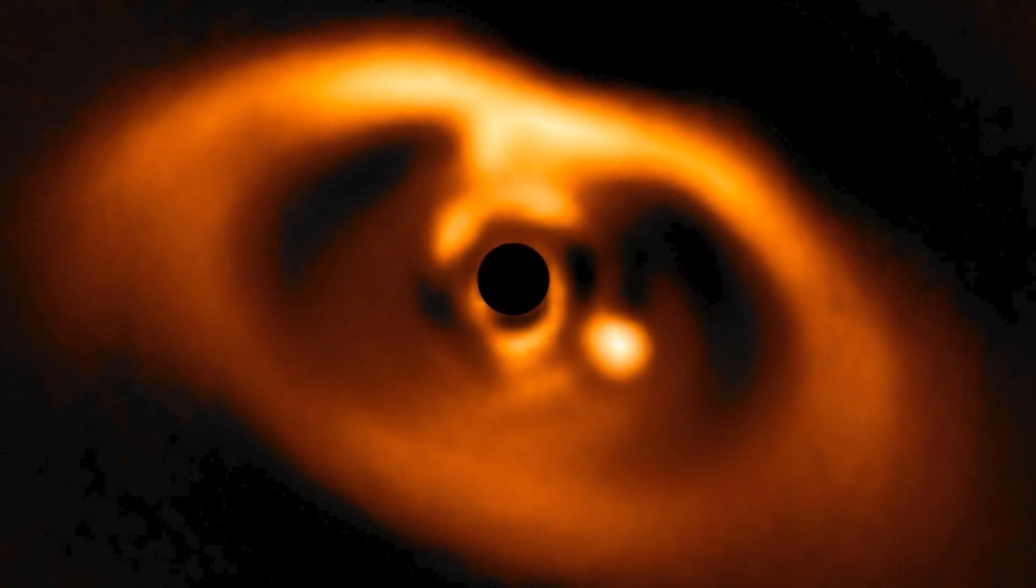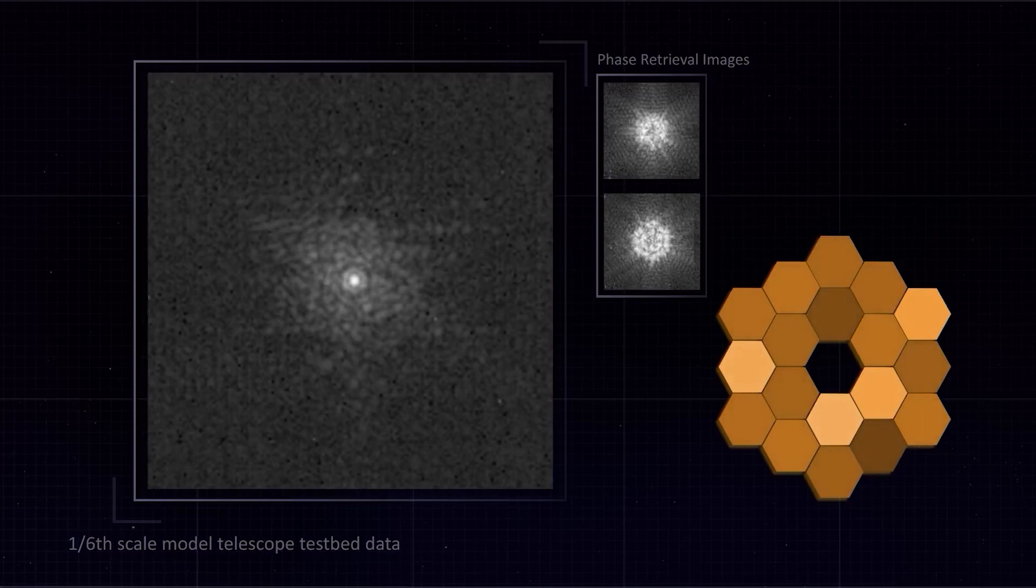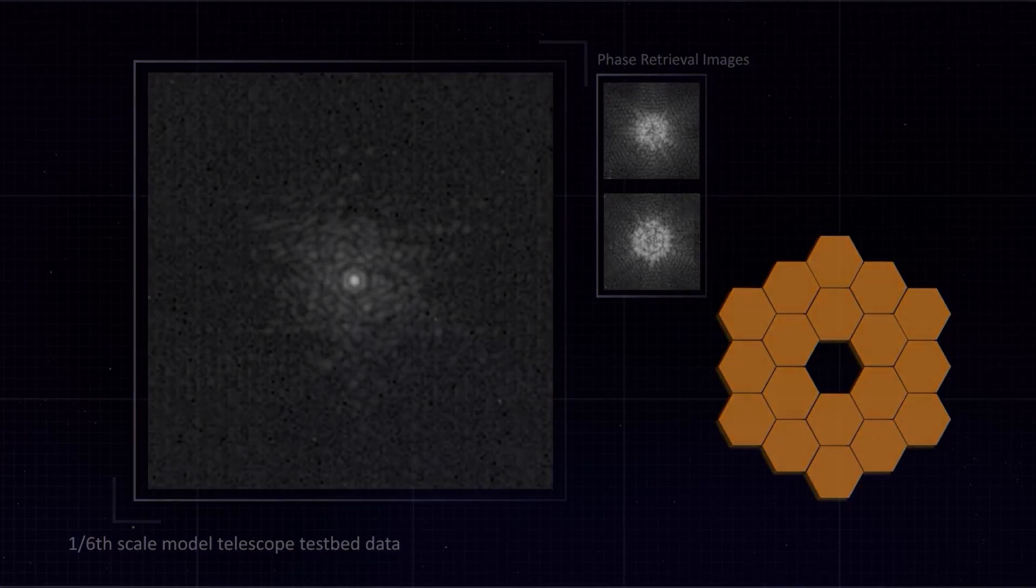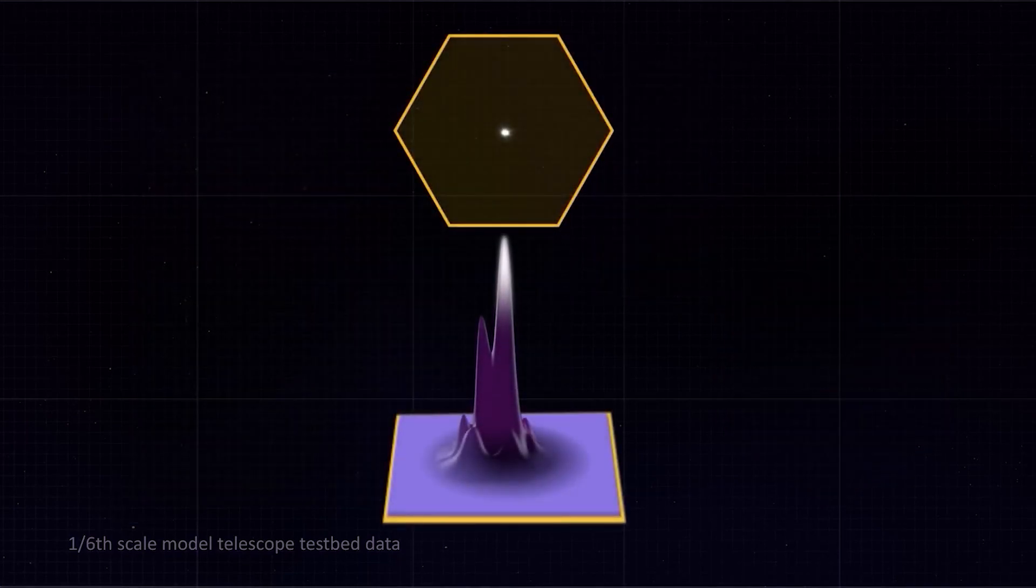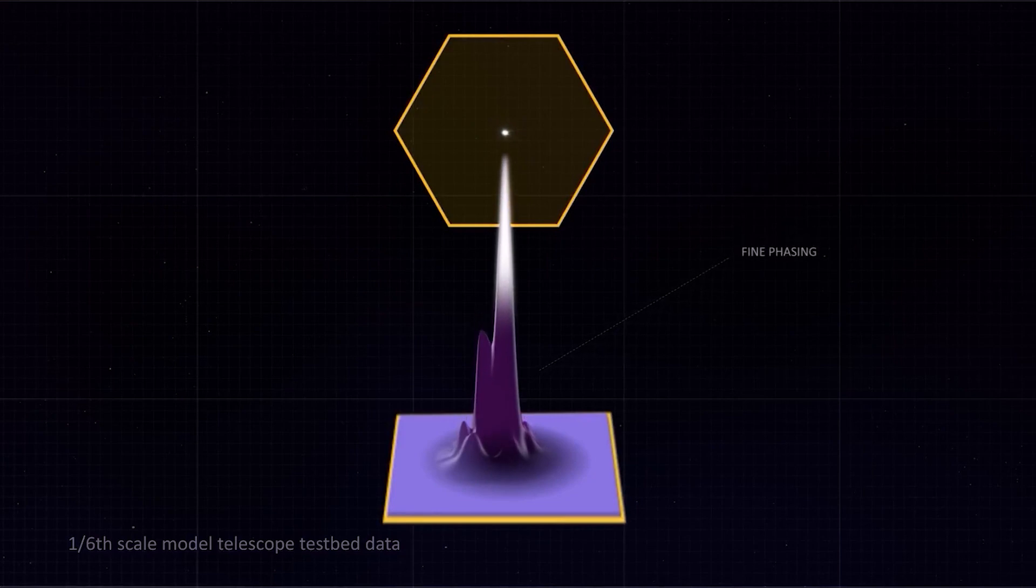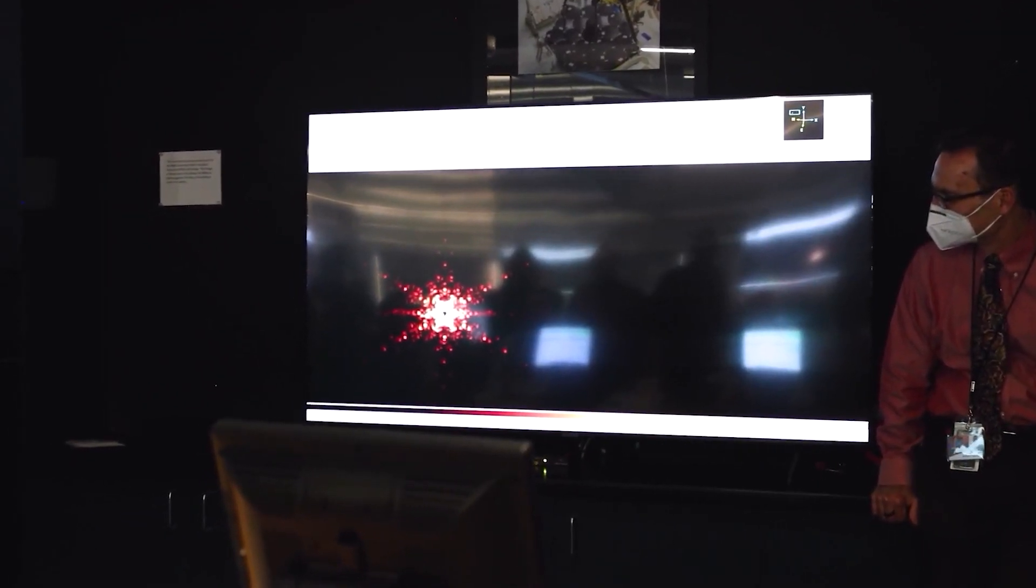Using the infrared instrument on the James Webb, scientists have discovered water in the form of hot steam at about 625 degrees Fahrenheit near the center of the disk of gas and dust that surrounds the star PDS-70.